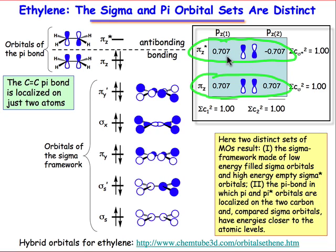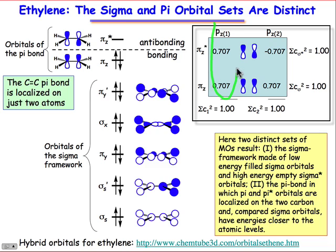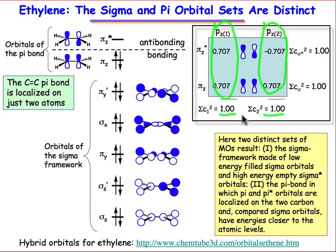Similarly, the antibonding molecular orbital is derived from coefficients which have the same magnitude but are opposite in sign. Just like the hydrogen molecule, we've fully utilized the atomic orbital centered on atom 1 and the one centered on atom 2 — we know that because the sum of their squares equals 1. In upcoming lessons, we'll look at π systems that are delocalized and consist of more than 2 atoms, examining how the coefficients change as the π system grows.